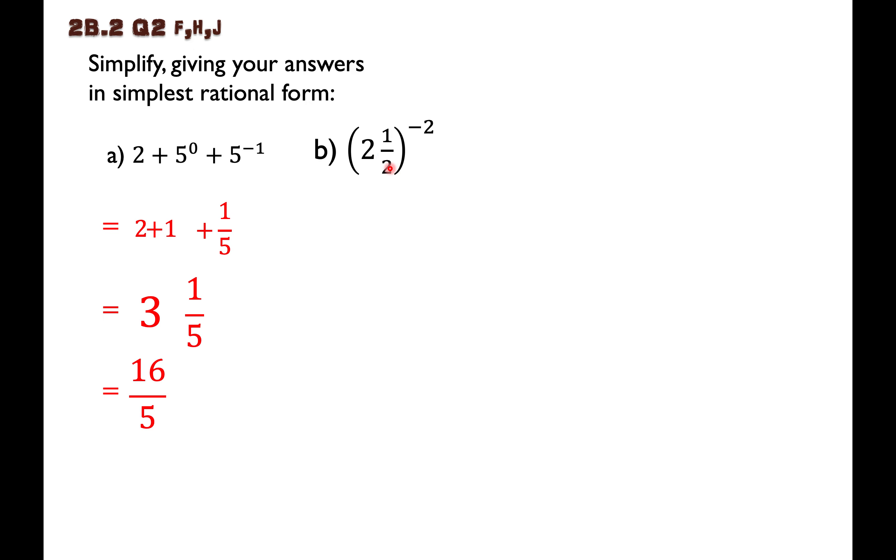And we can do the same thing. The bottom number, the denominator will be two. And the top number, the numerator will be two times two, which is four plus one makes five. So I have five over two. Everything else, the brackets, the negative two power, I just copied down.